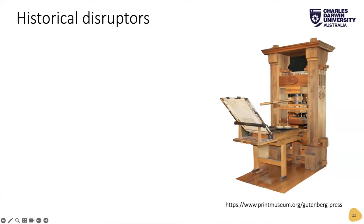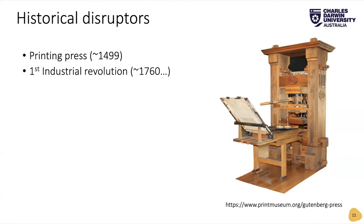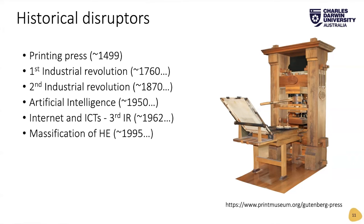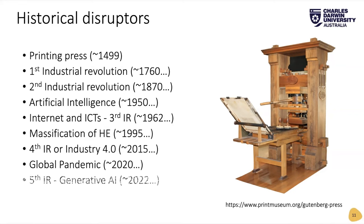Historical disruptions might be things like the printing press, back in 1499. The First Industrial Revolution. The Second Industrial Revolution. And artificial intelligence, of course, has been around since about 1950. But more importantly, the internet and ICTs, about 1962 — the massification of higher education and the Fourth Industrial Revolution. And what some scholars would now think is the Fifth Industrial Revolution, predominantly brought around by the massification of AI.